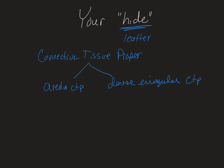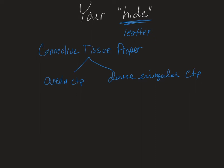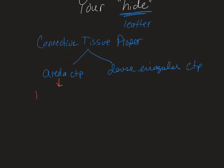With that, we've got vocabulary terminology you need to know with the dermis. The areolar connective tissue is the tissue of the papillary layer, and the dense irregular is the reticular layer. You need to memorize papillary layer and reticular layer.